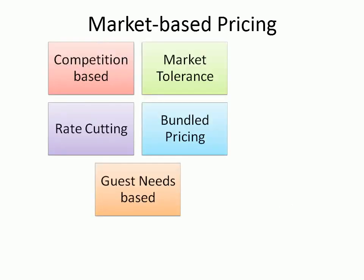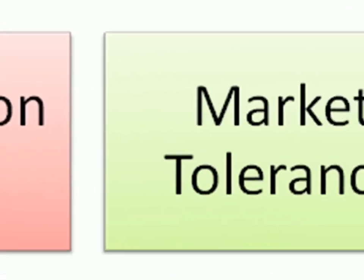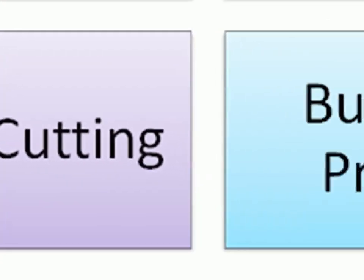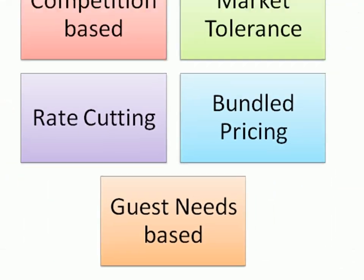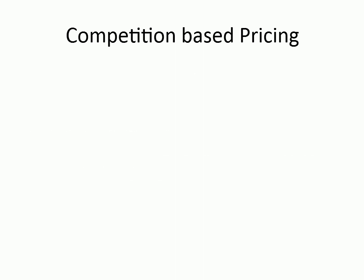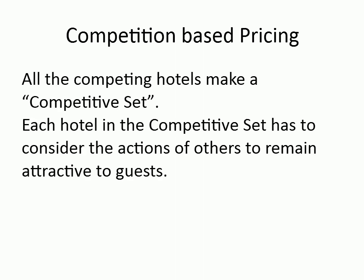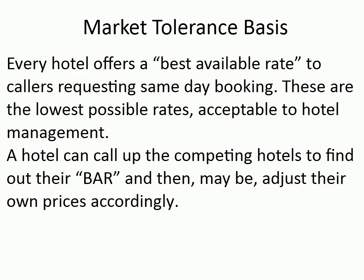Market-based pricing includes: competition-based, market tolerance, rate cutting, bundled pricing, and guest needs-based. Competition-based pricing: all the competing hotels make a competitive set. Each hotel in the competitive set has to consider the actions of others to remain attractive to guests. Market tolerance basis: every hotel offers a best available rate to callers requesting same-day booking. These are the lowest possible rates acceptable to hotel management. A hotel can call up competing hotels to find out their BAR (best available rate) and then adjust their own prices accordingly.